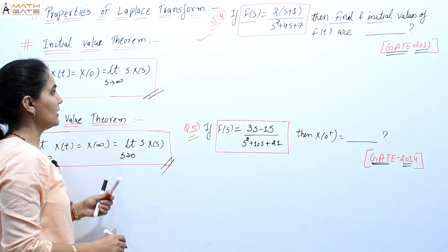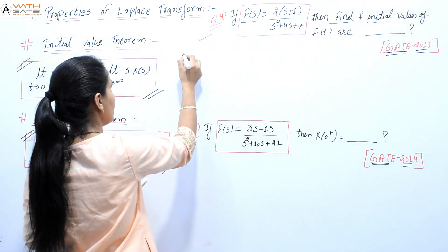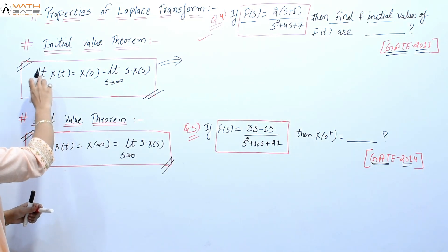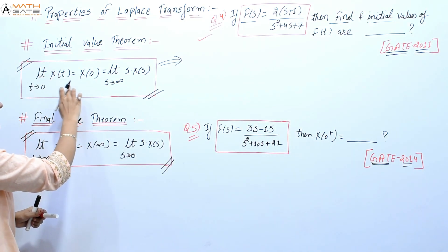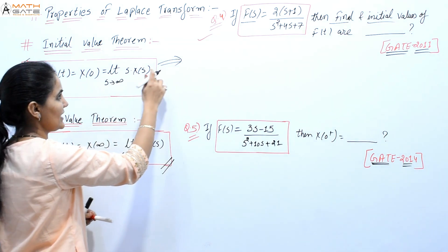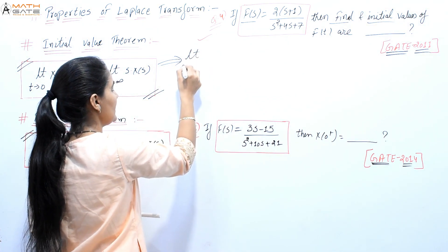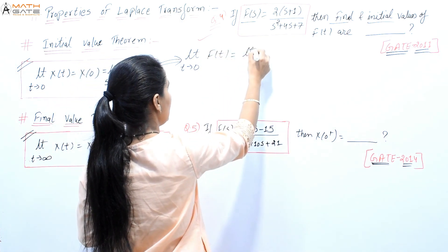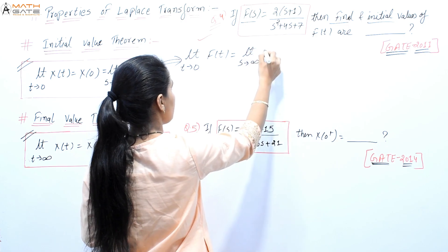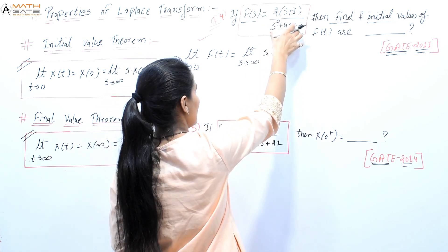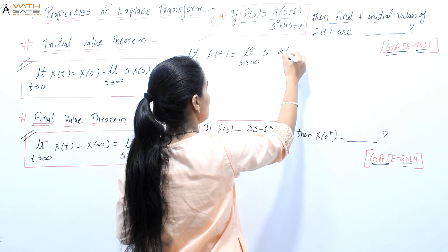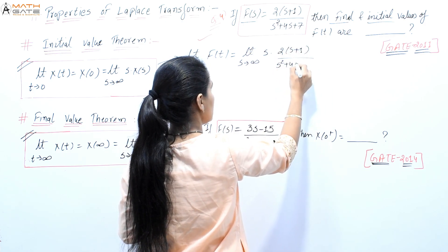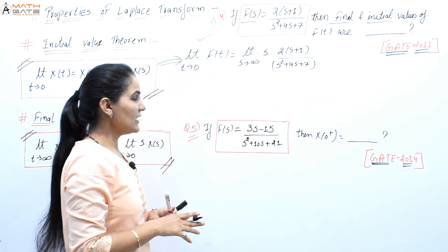First, let's talk about the initial value theorem. The statement is: limit as t tends to 0 of x(t) equals limit as s tends to infinity of s·X(s). So here, limit t→0 of f(t) equals limit s→∞ of s·F(s), which is s · 2(s+1)/(s²+4s+7).